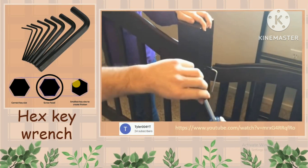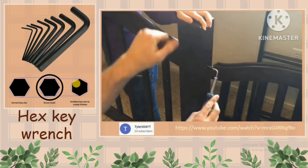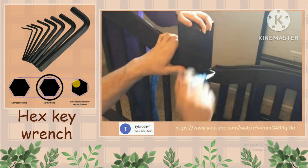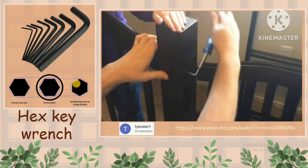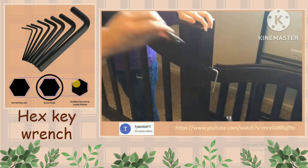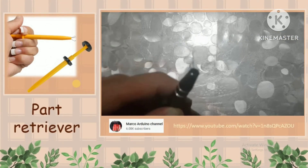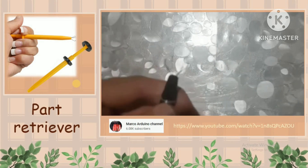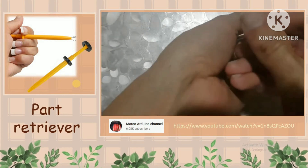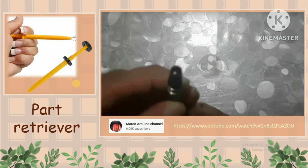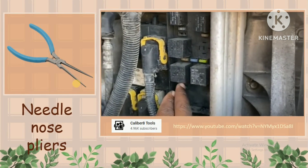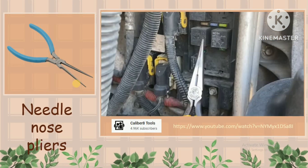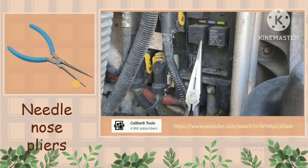Use a hex driver to loosen and tighten bolts and nuts that have a hexagonal head. Hex bolts should not be over-tightened because the threads of the bolts can be stripped. Always use the appropriate size of hex driver for its specific bolt size. Use a part retriever to hold small objects and help place or retrieve objects that may be hard to reach with your fingers. You can also use needle nose pliers or tweezers to hold small objects or retrieve objects that may be hard to reach with your fingers.